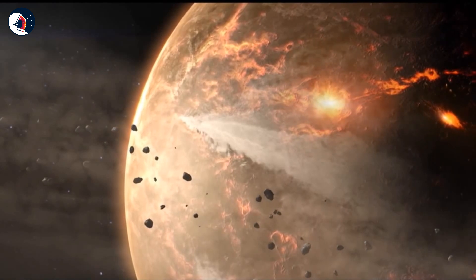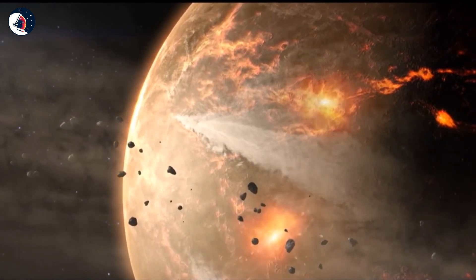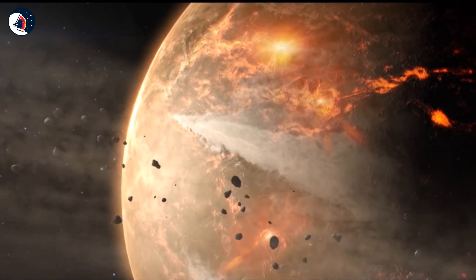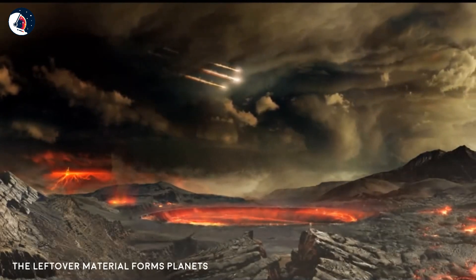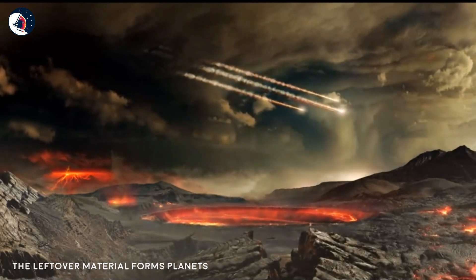The formation of the sun didn't take up all of the cloud it was born from. What was left continued to orbit the star, while planets formed from the leftover material.